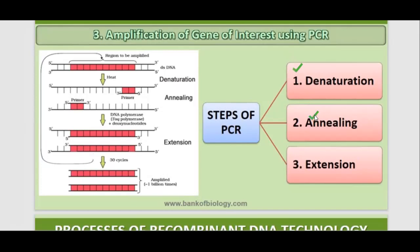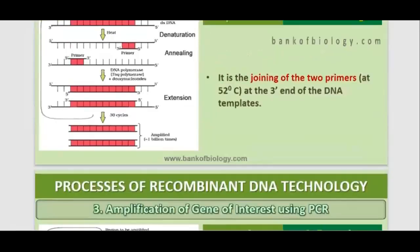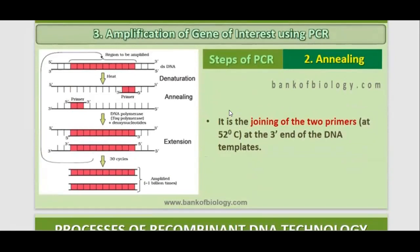The basic steps of PCR are: first, denaturation; then annealing; and then extension. Denaturation is the heating of the target DNA — our gene of interest — at a high temperature of approximately 94 degrees Celsius to separate the strands. The DNA is in double helix form, and we separate these strands at high temperature. Each strand then acts as a template for DNA synthesis.